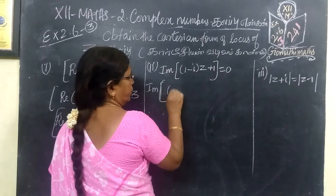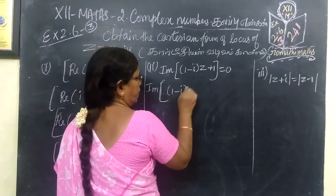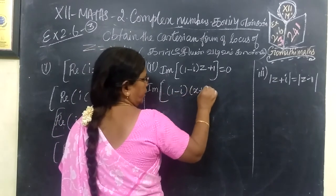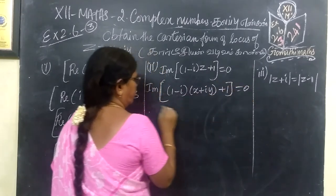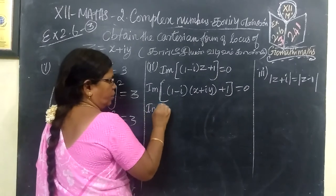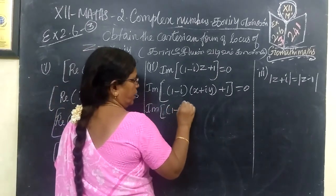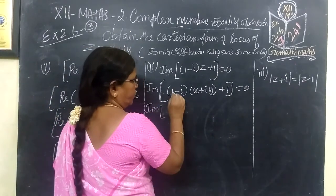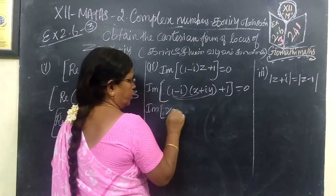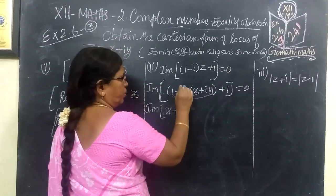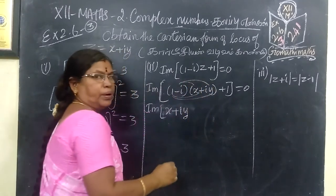This is easier. 1 minus i, for easier, you are writing x plus iy, then plus 1. This is equal to 0. So, imaginary of 1 minus i, multiply first. First, 1 into something, same. So, x plus iy, that's why I'm going to multiply.